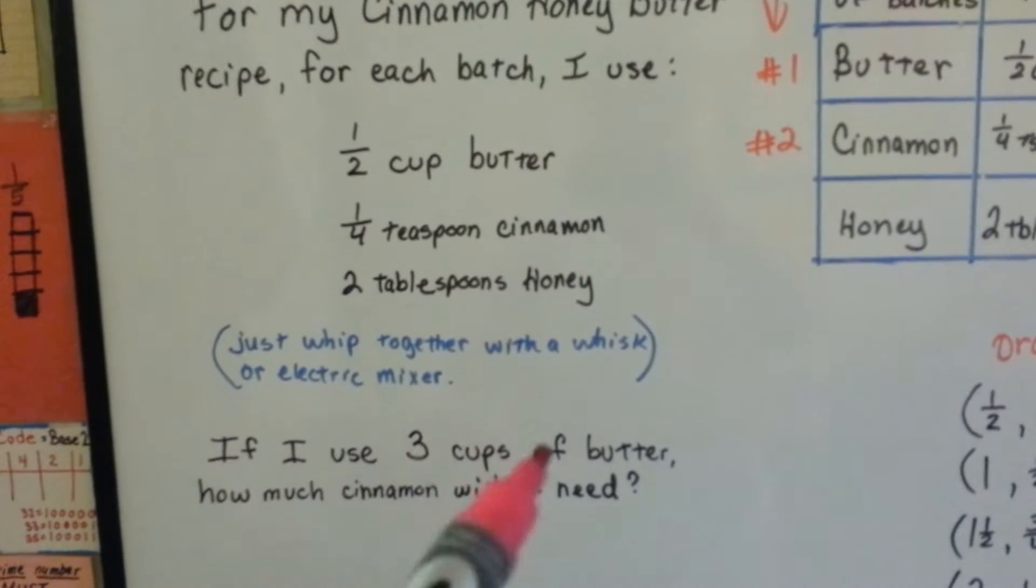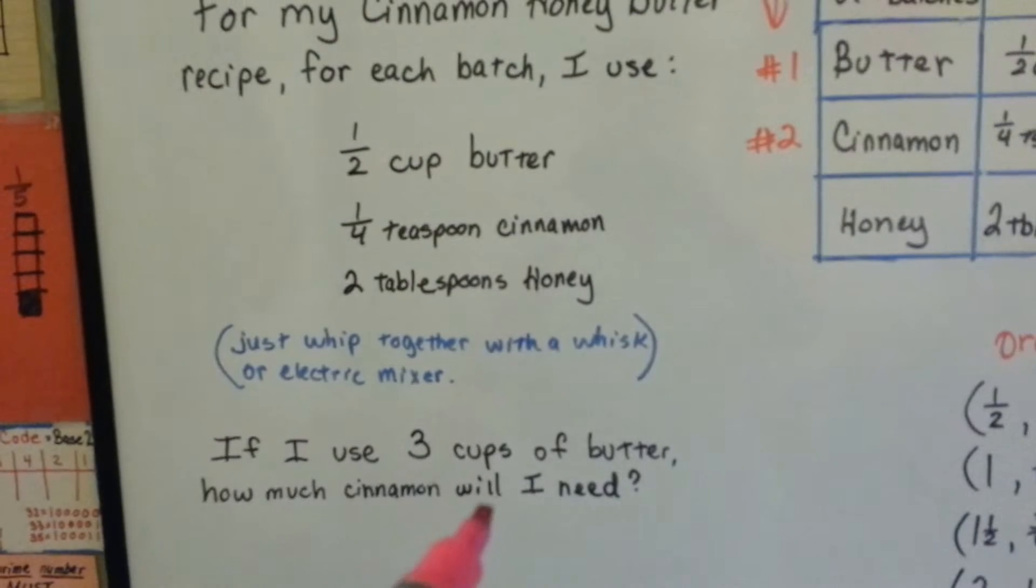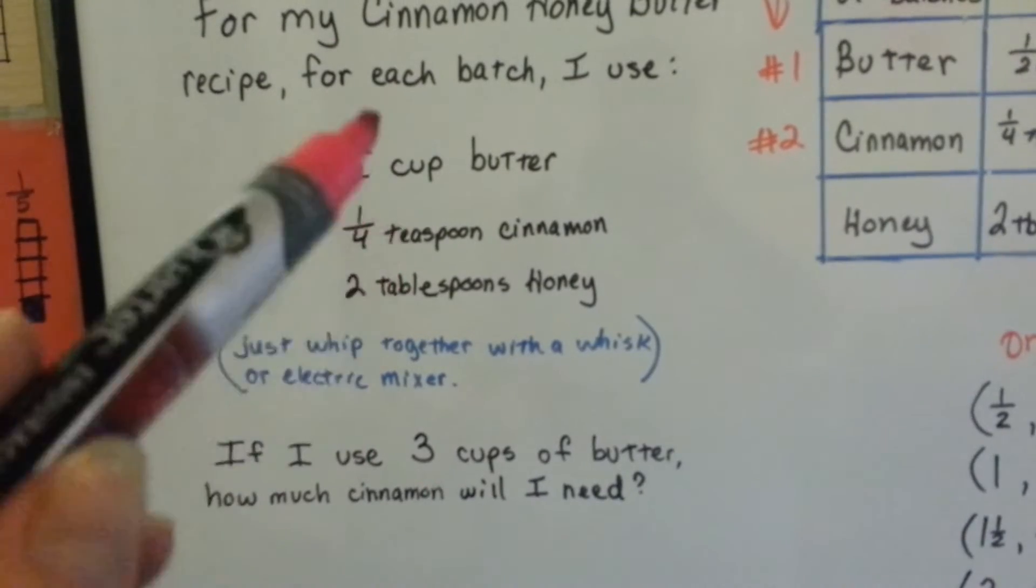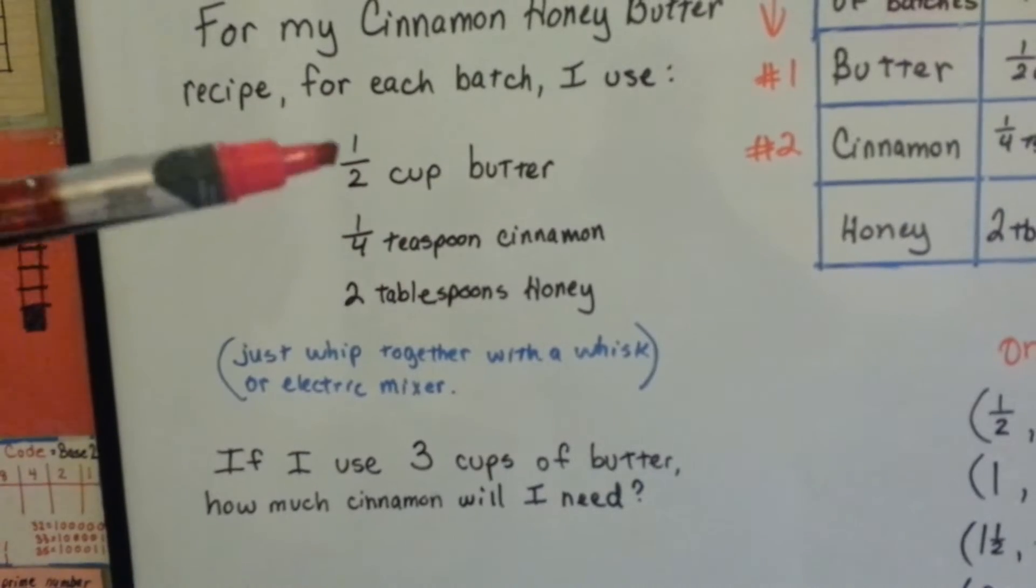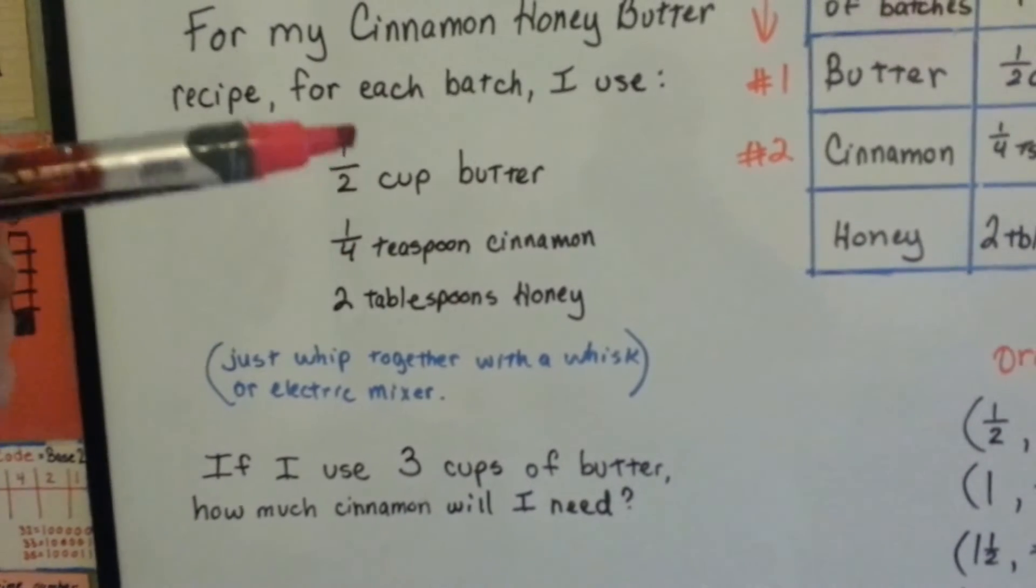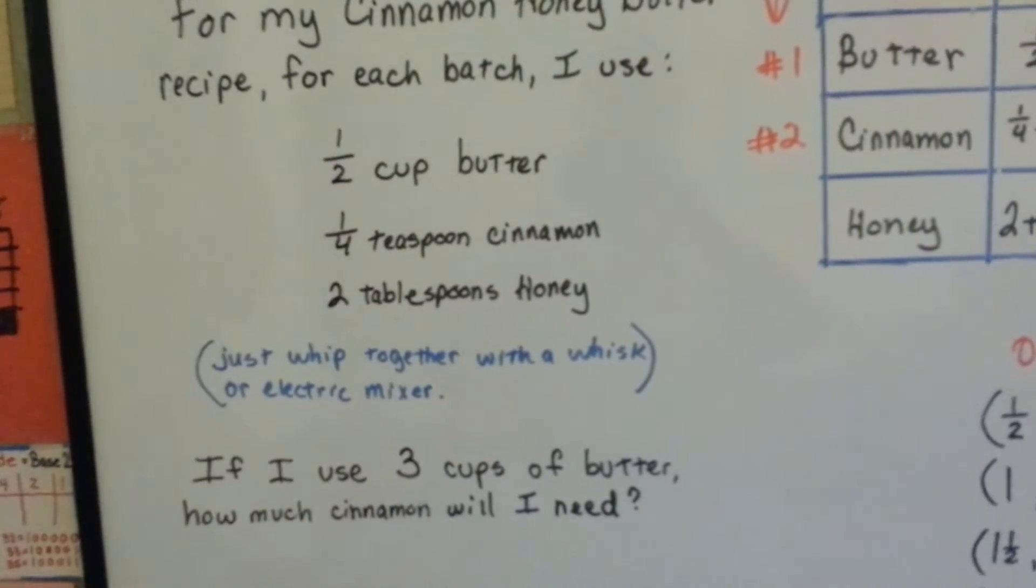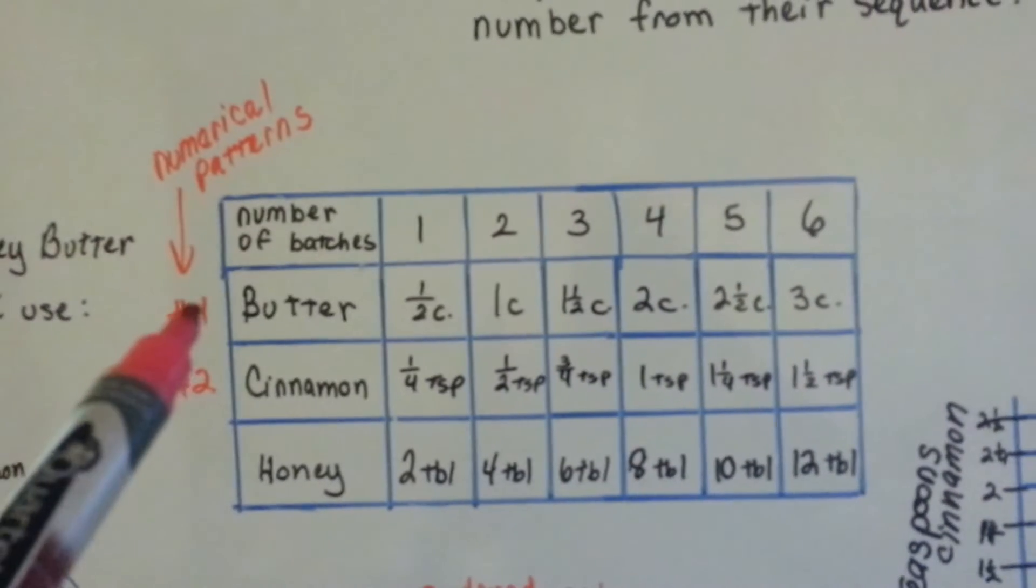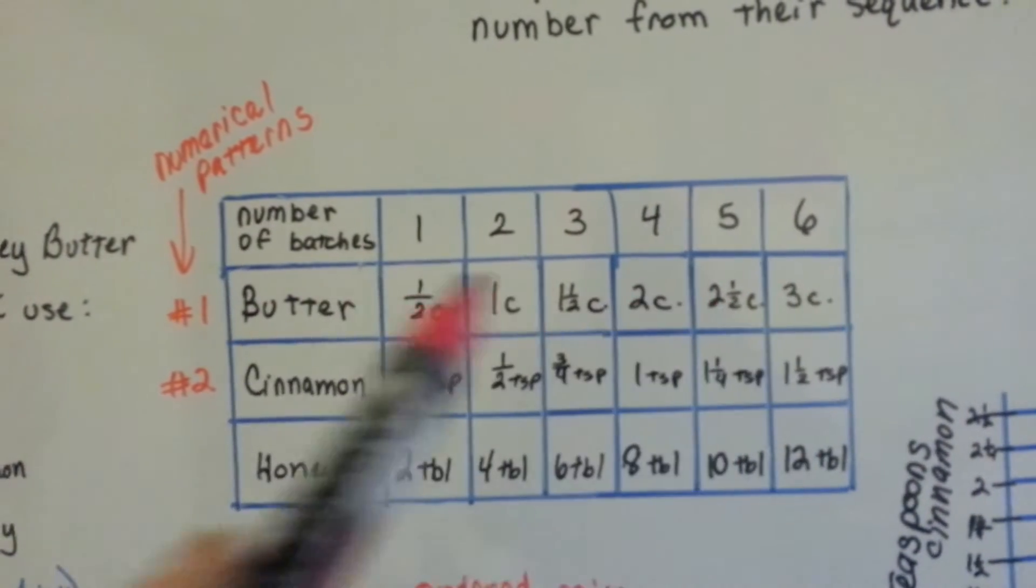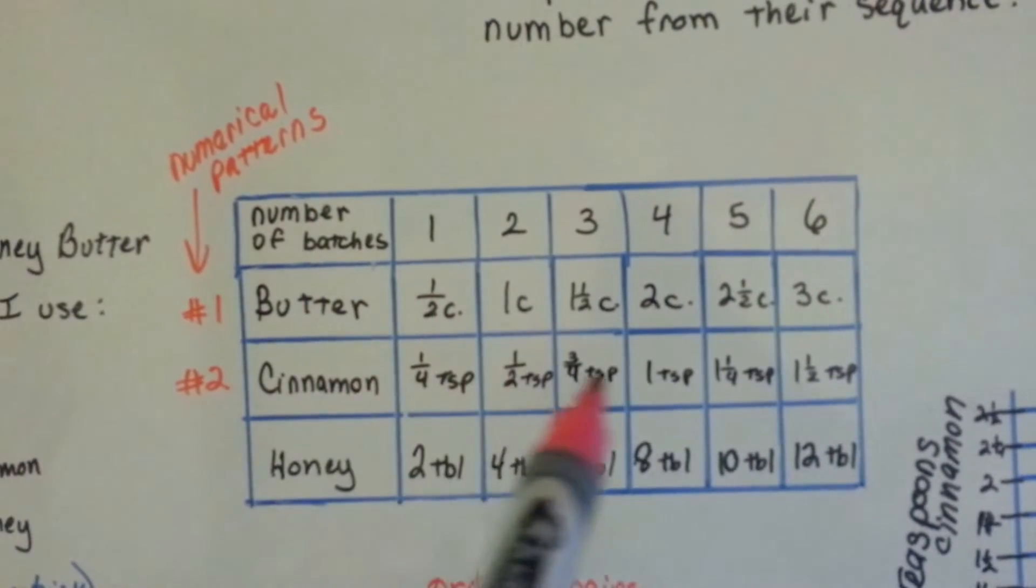If I use three cups of butter, how much cinnamon will I need? We need to increase the cinnamon and honey proportionally with the butter. But we're not worried about the honey; we're focused on the cinnamon. So here's our first numerical pattern, the butter, and our second numerical pattern, the cinnamon.